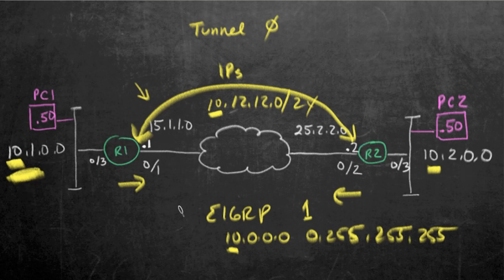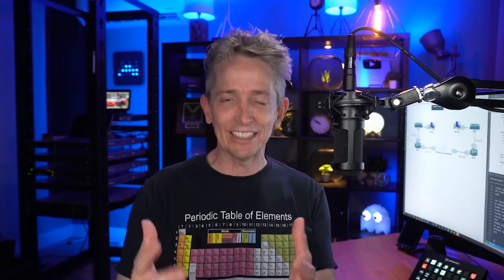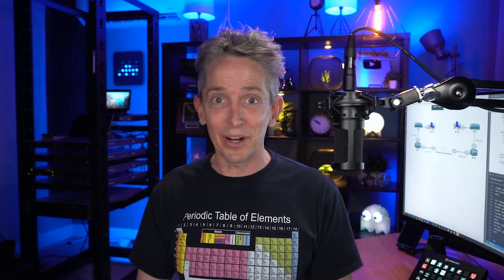I think that's all we need to do. So with that plan in place, our next step is to configure it. That's exactly what we're going to do in the next video. We'll configure the GRE tunnels, the routing protocol EIGRP, and verify that it works.